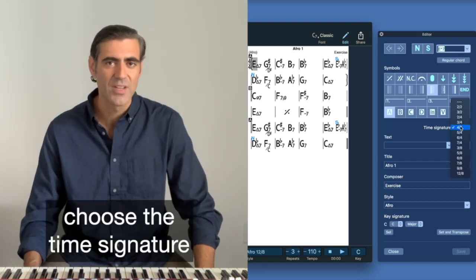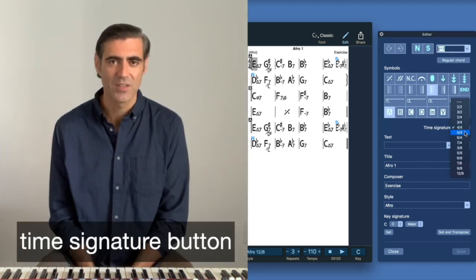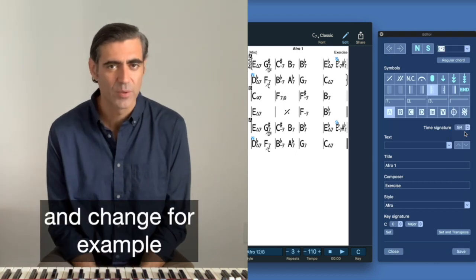Choose the time signature in the editor panel. Click on the time signature button and change for example to 5-4.